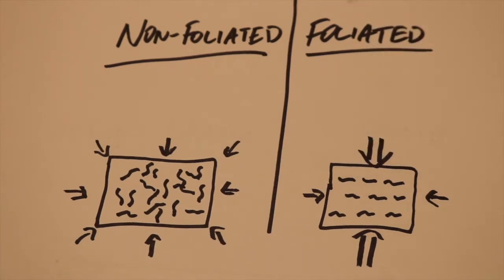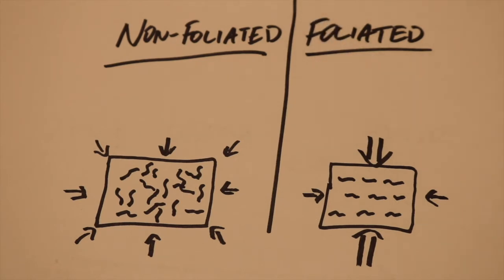So, foliated rocks are a direct result of regional metamorphic environments, and non-foliated rocks are a direct result of contact metamorphic environments. Low pressure, high temperatures versus high pressure, high temperatures. So, let's take a look at an example of some non-foliated and foliated rocks.